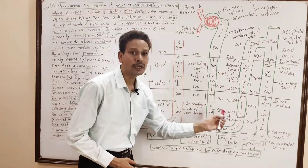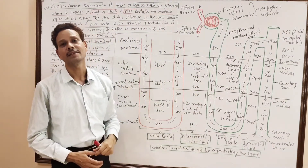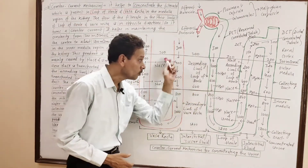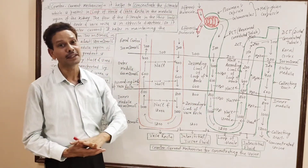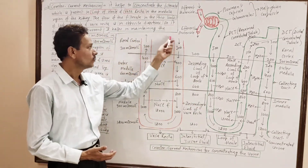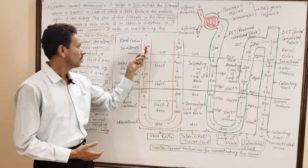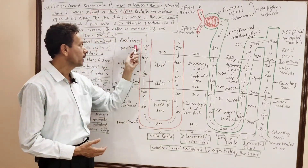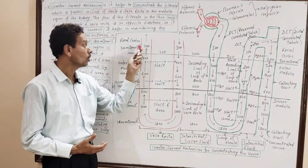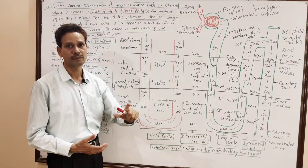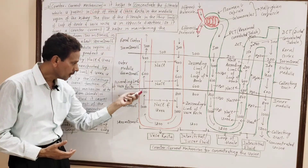This counter current system maintains the osmolarity of the filtrate. In the cortical part of the kidney, the osmolarity is 300 milliosmol per liter, which increases progressively into the inner part of the medulla.